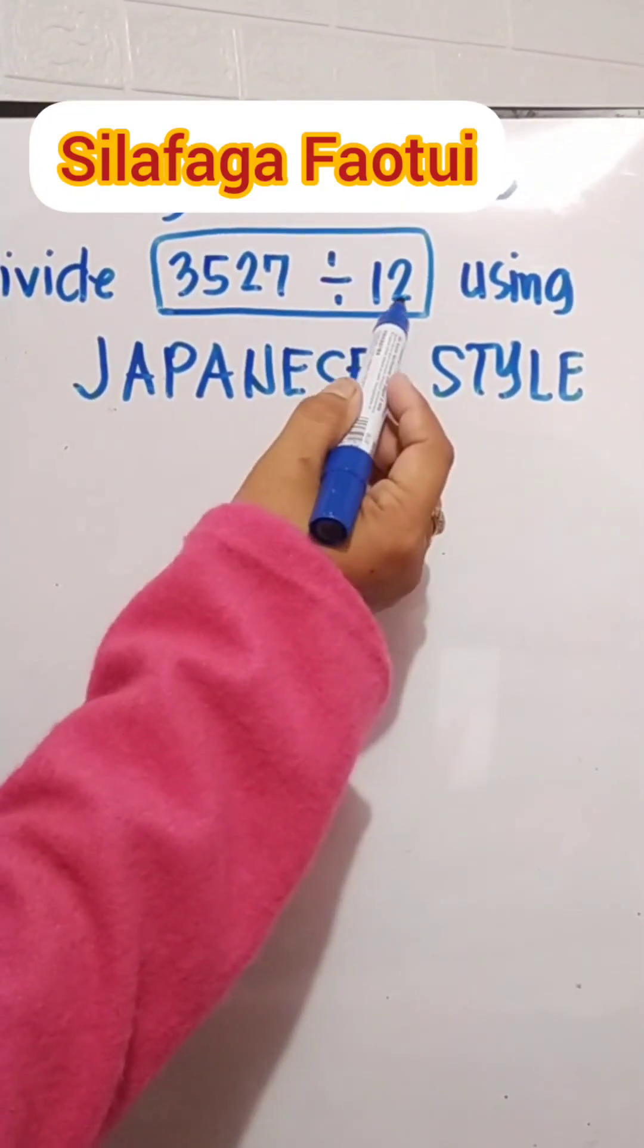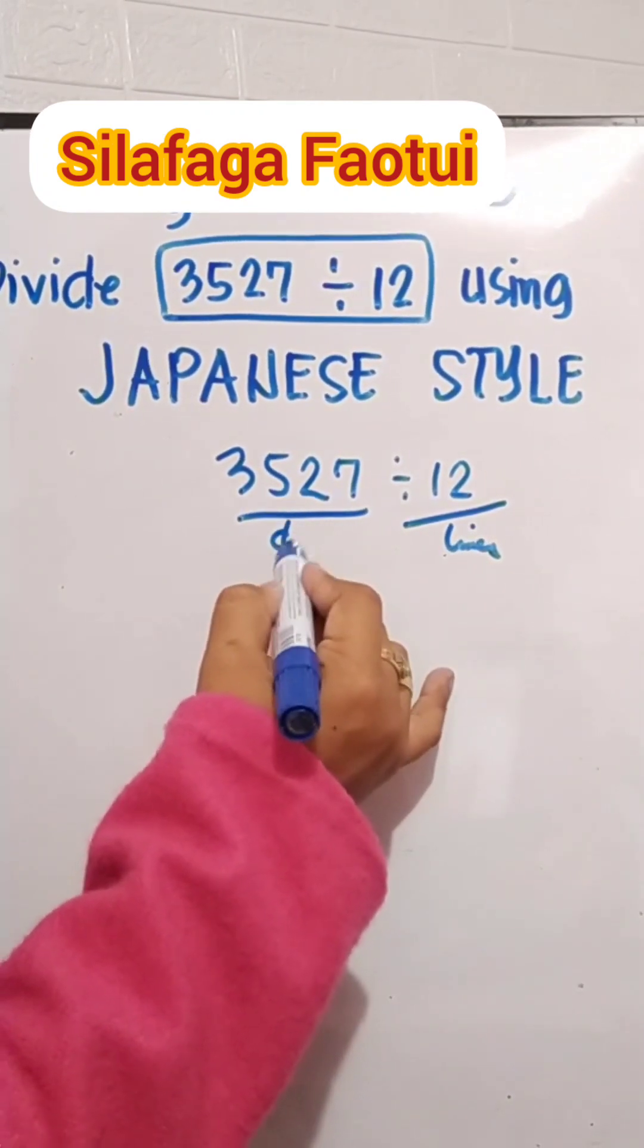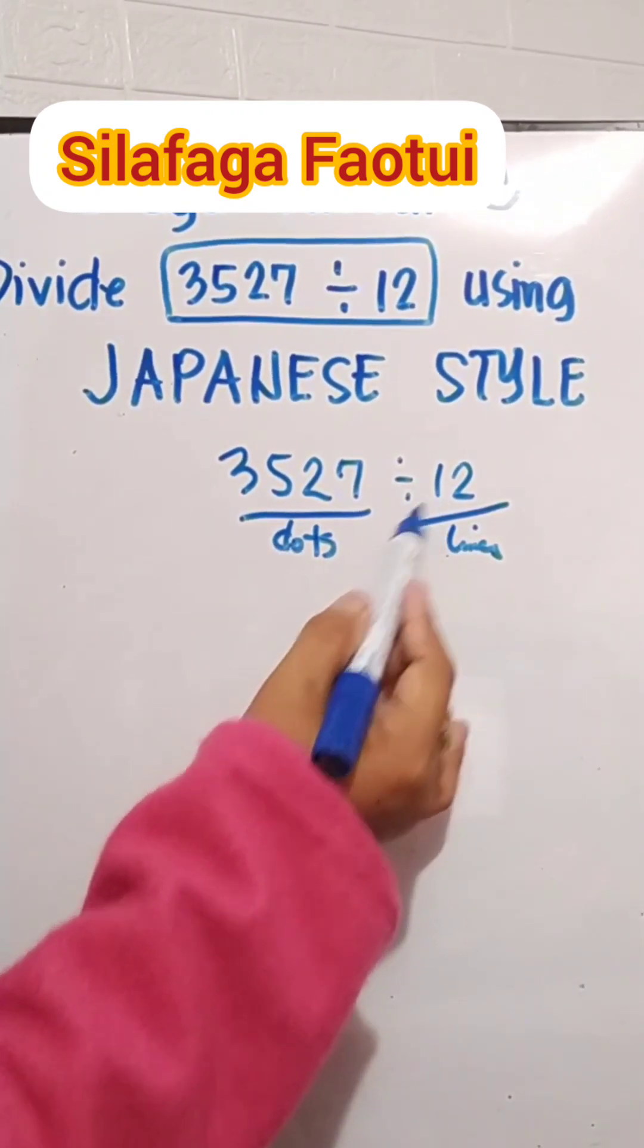3,527 divided by 12. Here, your divisor would be your lines and your dividend would be your dots. We will draw 12 lines.